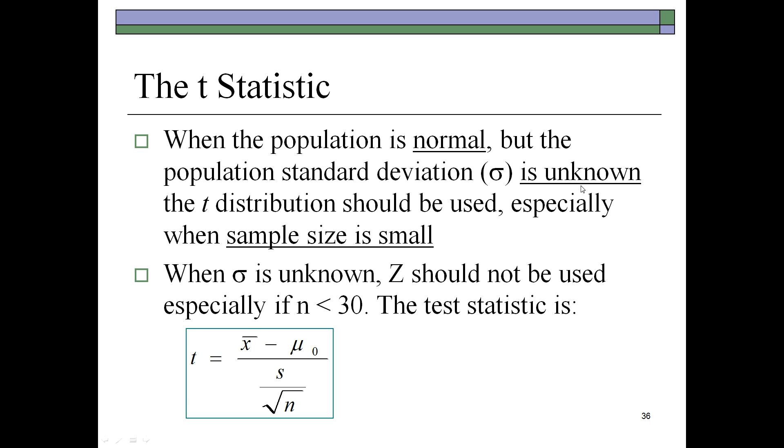First, sigma has to be unknown, meaning we're going to have to use s instead of population standard deviation sigma. And automatically, that converts this statistic to a t-statistic.